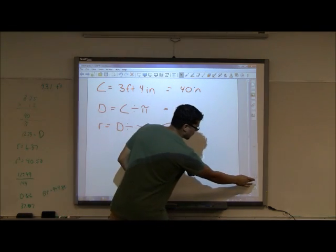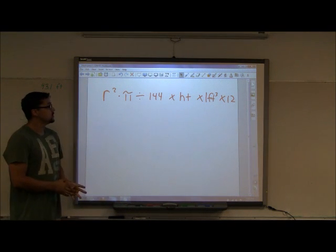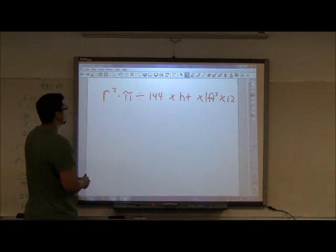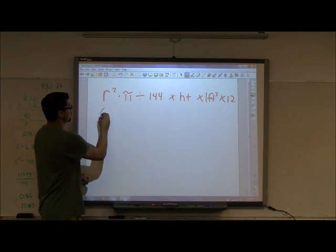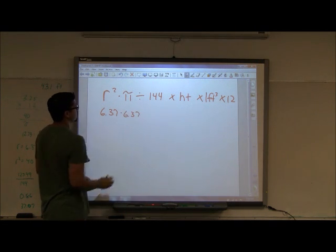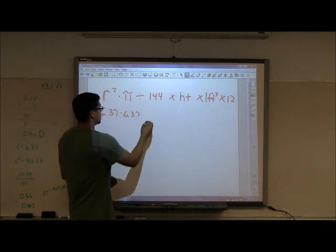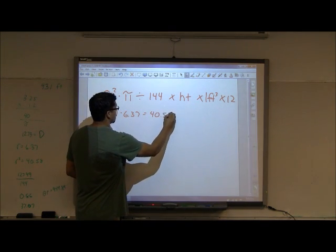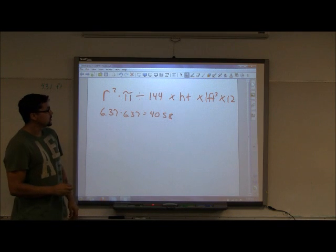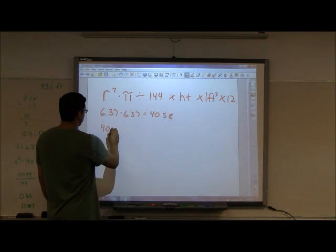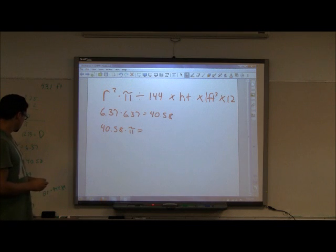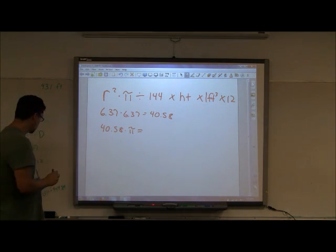For our next step, this is our formula we are going to use to find the board feet. Take our radius, you square it, so 6.37 squared is going to equal 40.58. So we will get that, take that measurement, 40.58, and we are going to multiply it by pi. So 40.58 times pi is going to equal 127.49.